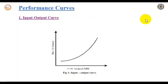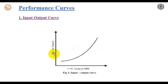Performance curves in the economic operation of the power system. First one is the input-output curve. The input-output curve is a fundamental curve for a thermal plant. It is a plot of the input in British thermal units per hour versus the power output of the plant in megawatt.